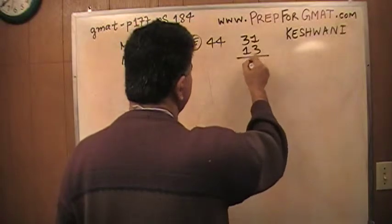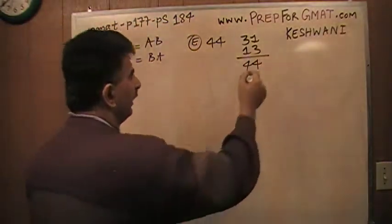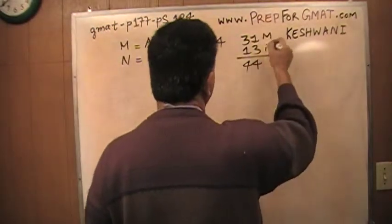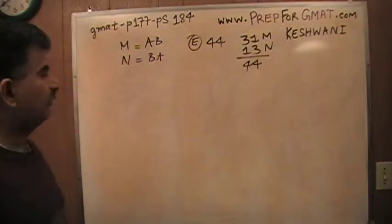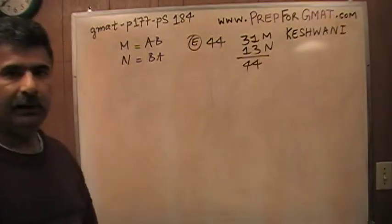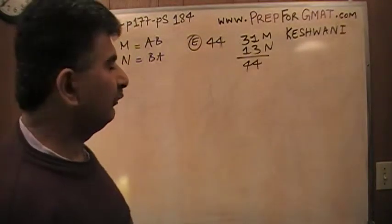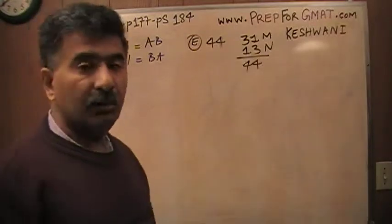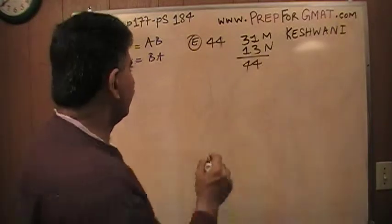If you add up 31 and 13, so this is our M, this is our N, when you add them up, they add up to 44. And the question simply was, which of the following cannot be the sum? Since 44 we just showed here, could be the sum of M and N, it's not the answer.